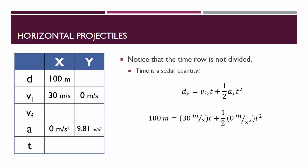So we have 100 meters equals 30 meters per second times the time plus one half of zero times T squared. If we solve that for T, we find that it took 3.3 seconds for that car to hit the ground.